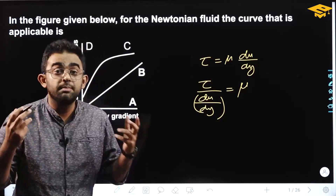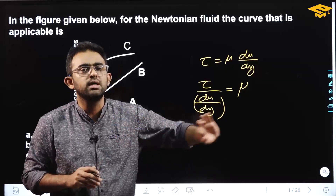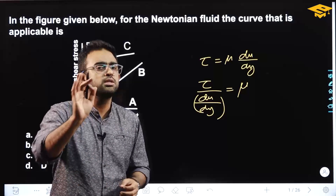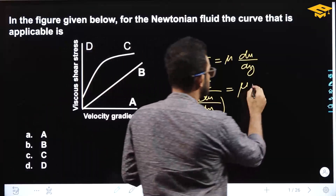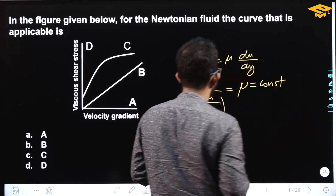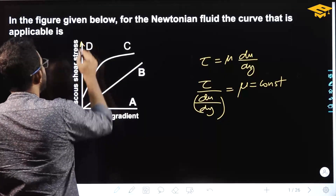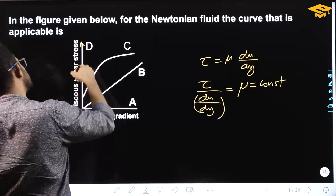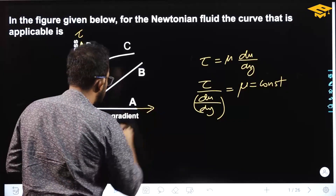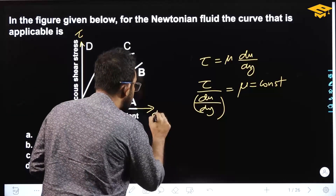Newtonian fluids have constant viscosity throughout the deformation, so mu should be constant. The y-axis is the shear stress, represented as tau, and the x-axis is the velocity gradient du divided by dy.